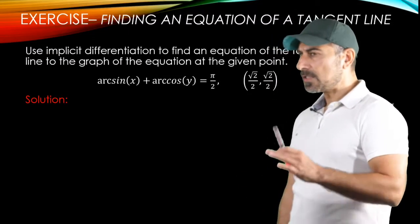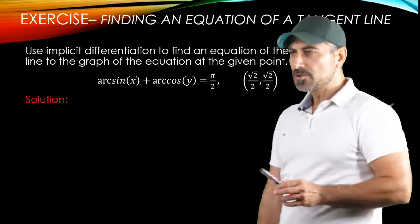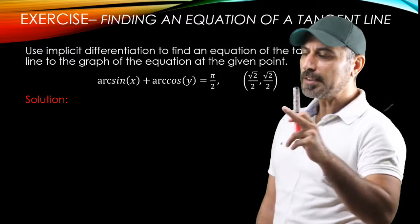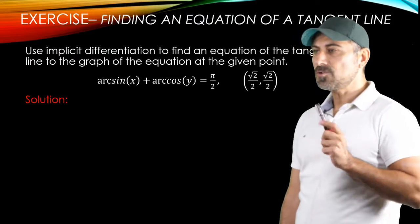So we are going to apply the tools of implicit differentiation to come up with the derivative of y. Once we're done with that, we're going to write down the slope point form of the tangent line. For the time being, we need two formulas.